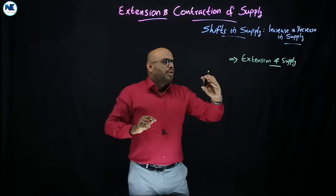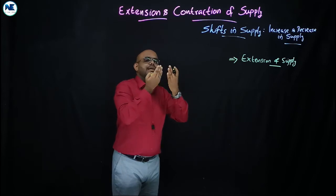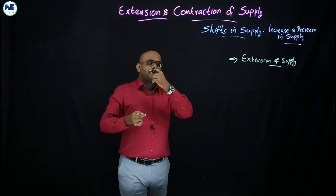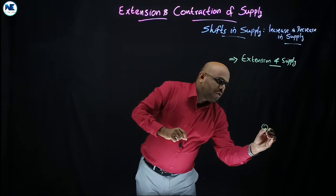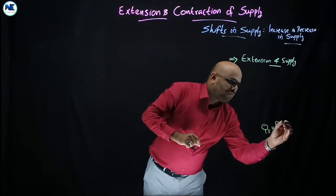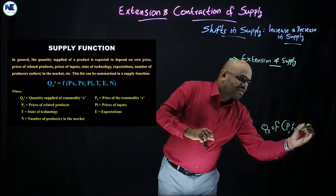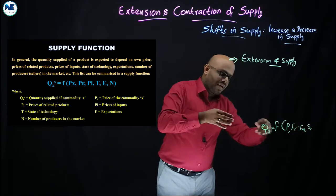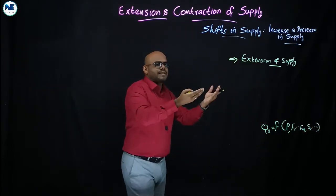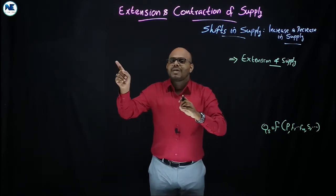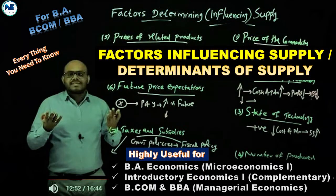The quantity of supply will be increased or decreased based on price. The supply function is: quantity of supply equals function of price of the commodity, prices of factors of production, state of technology, prices of other commodities, expectations, and so on. These are the factors determining supply that we have already discussed.